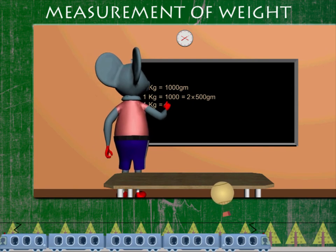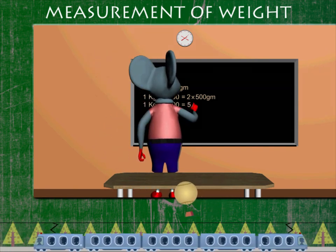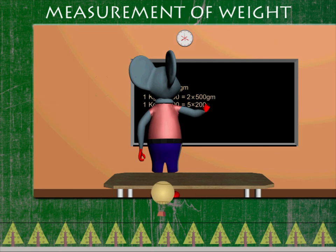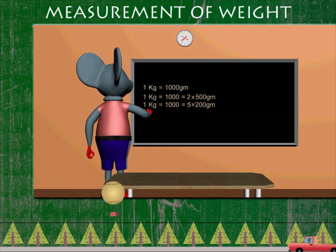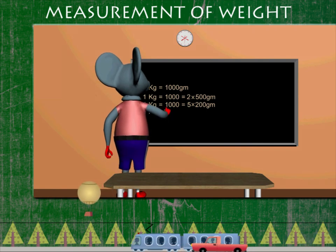Robby writes that 1 kilogram is made of 5 parts of 200 grams, or 200 grams is one-fifth of a kilogram.